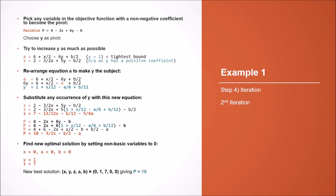We can now find our new solution by setting all non-basic variables to 0. At the moment, x equals 0, a equals 0, and b equals 0, giving us y equals 1 and z equals 7, and a best solution of p equals 10.